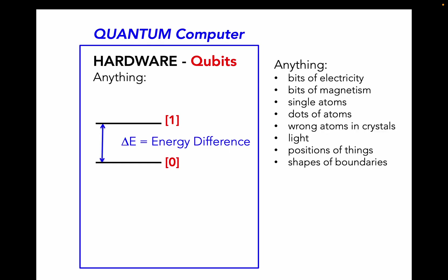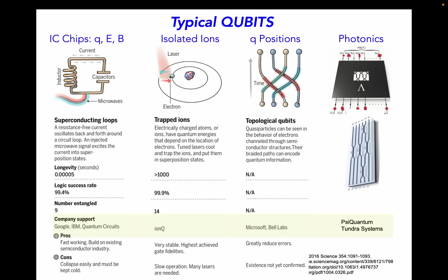So anything that has a small energy difference lives in the world of quantum and we can use that as the basis for a quantum computer. This includes things like small bits of electricity or magnetism, single atoms or where the electrons are in those atoms, dots of atoms, small groups of atoms, a wrong atom sitting in a place in a crystal to create a different energy level, light that is photons with spin up or spin down, even the positions of things or the shapes of boundaries if they lead to this small energy difference.